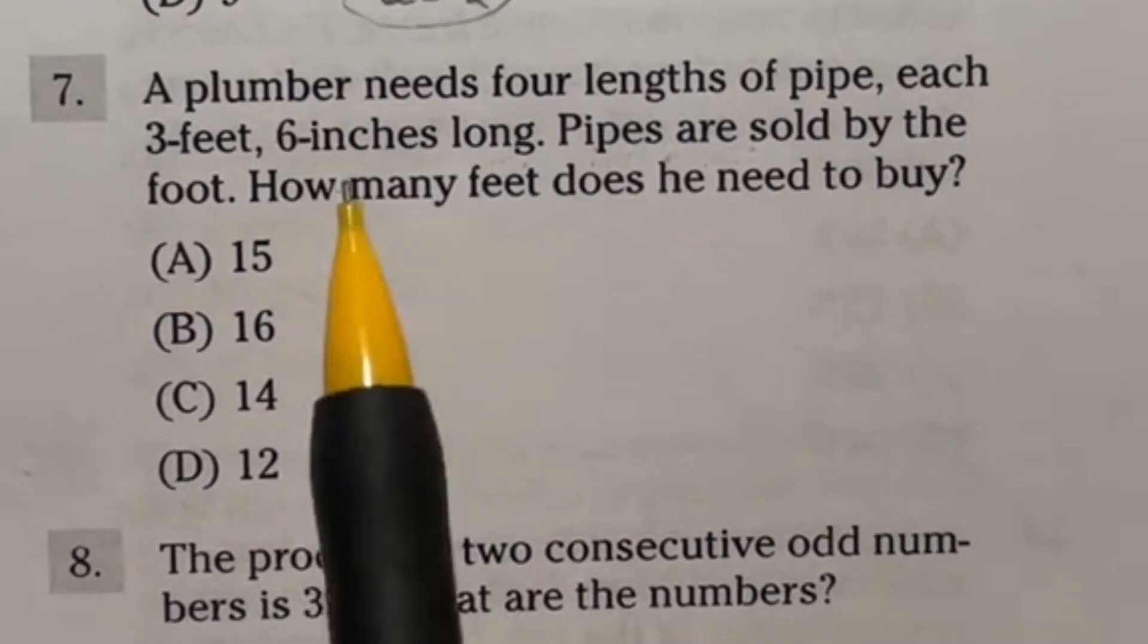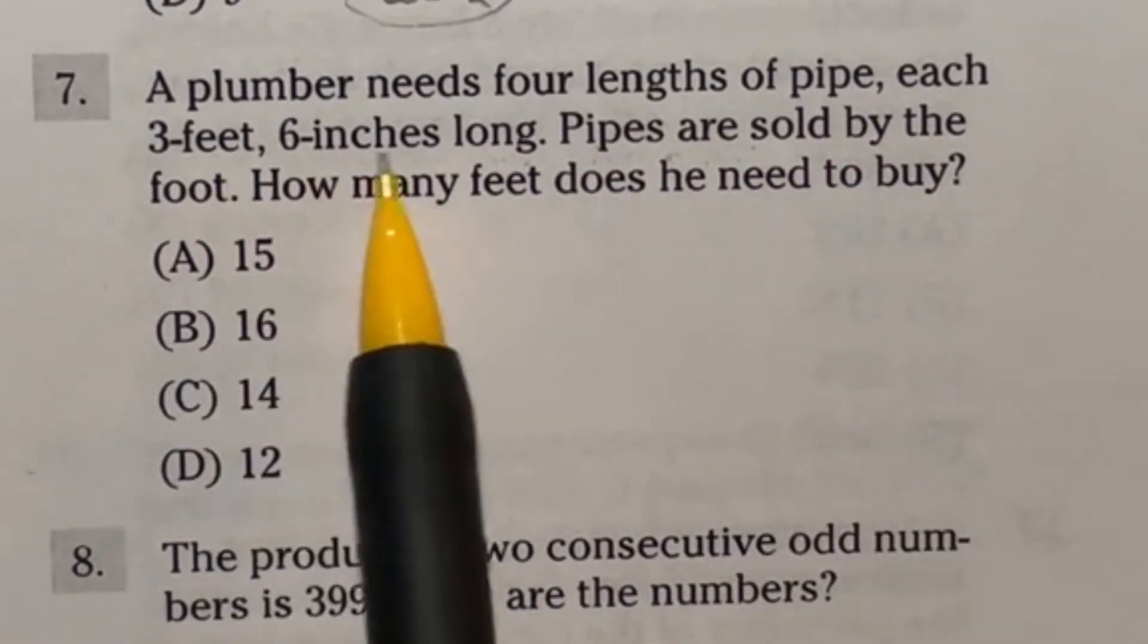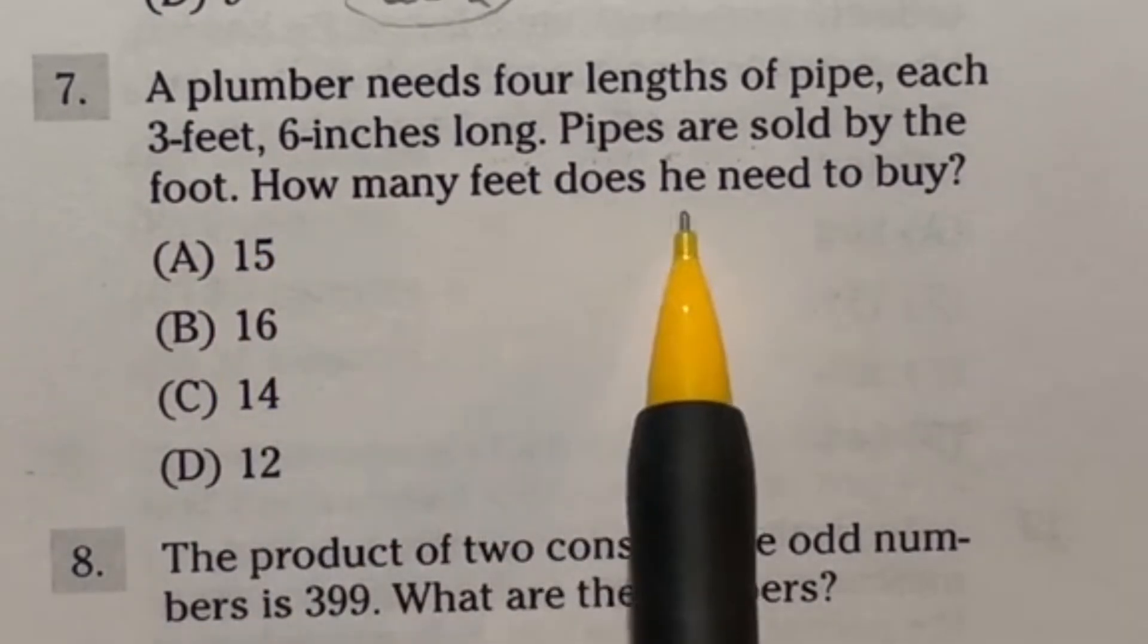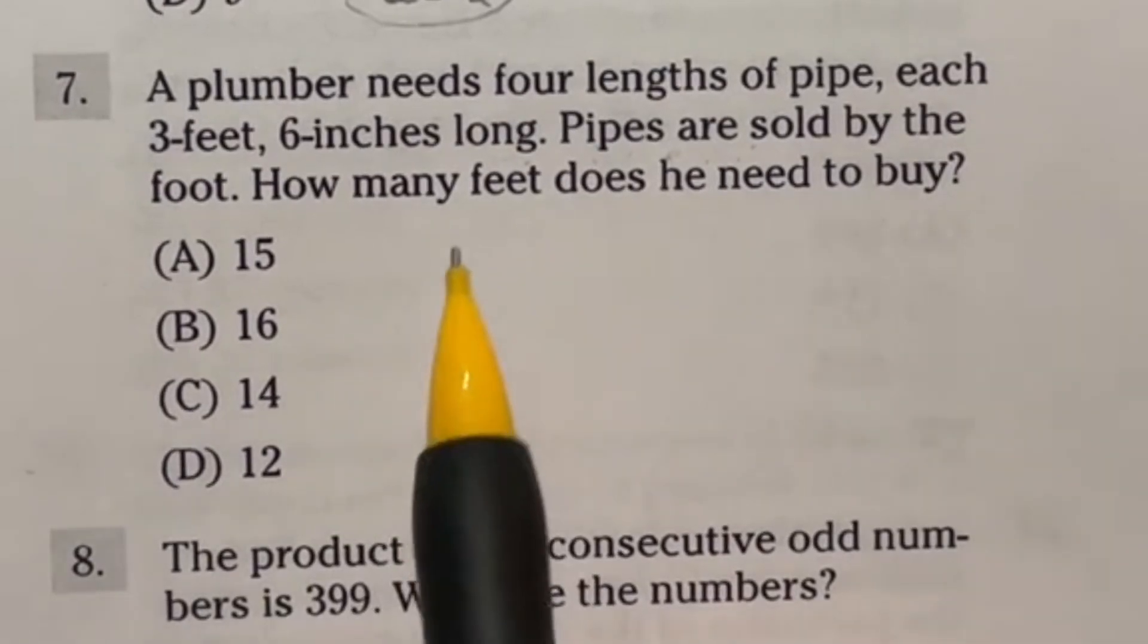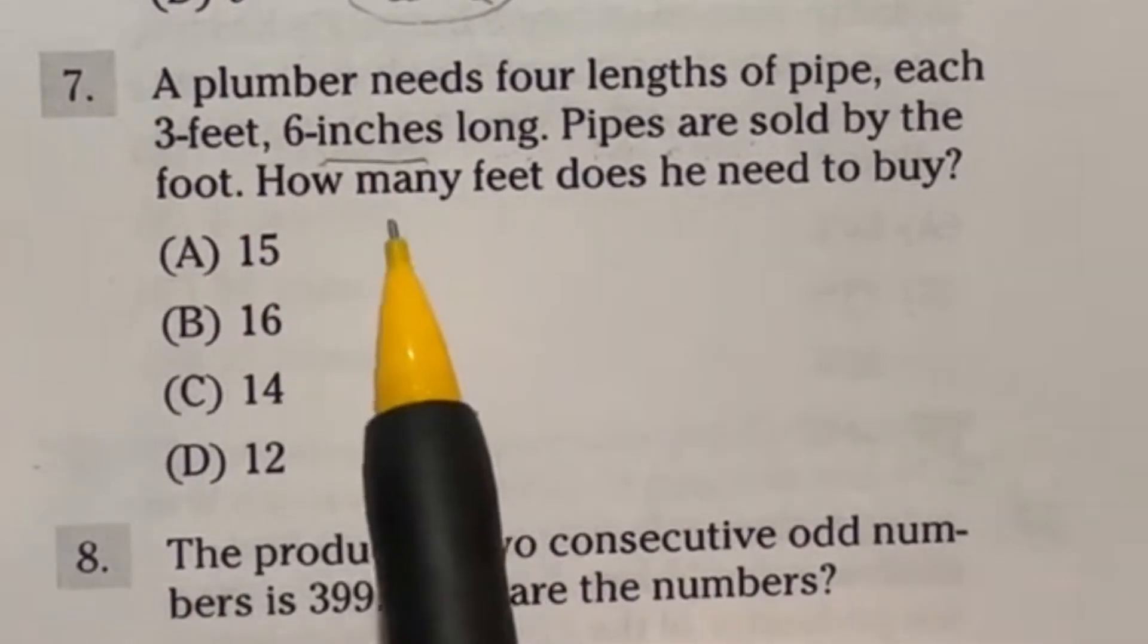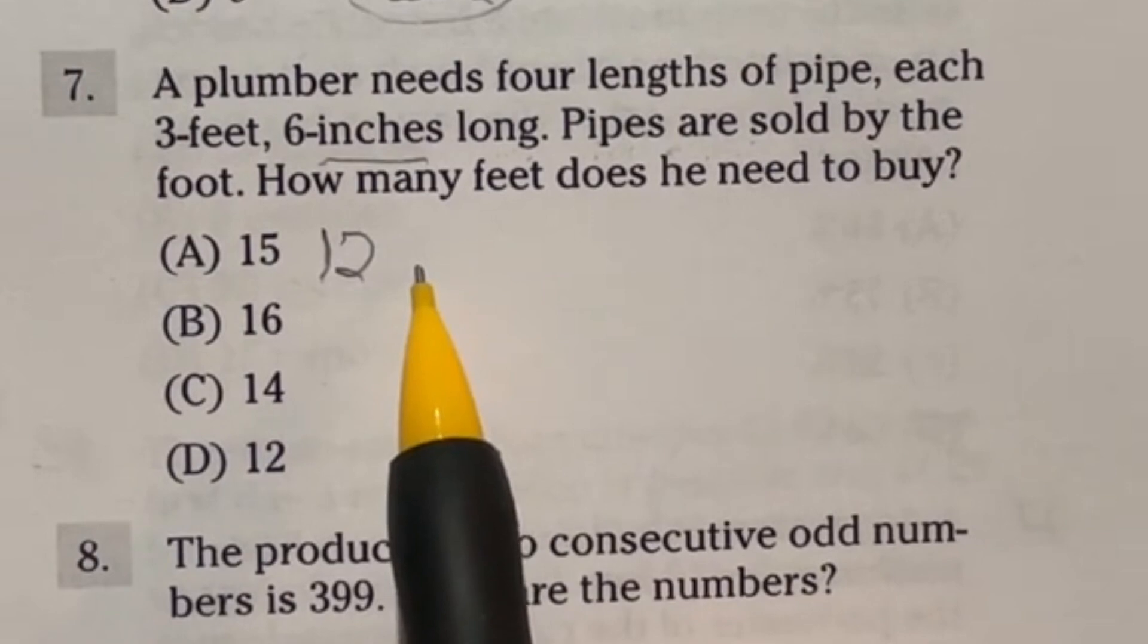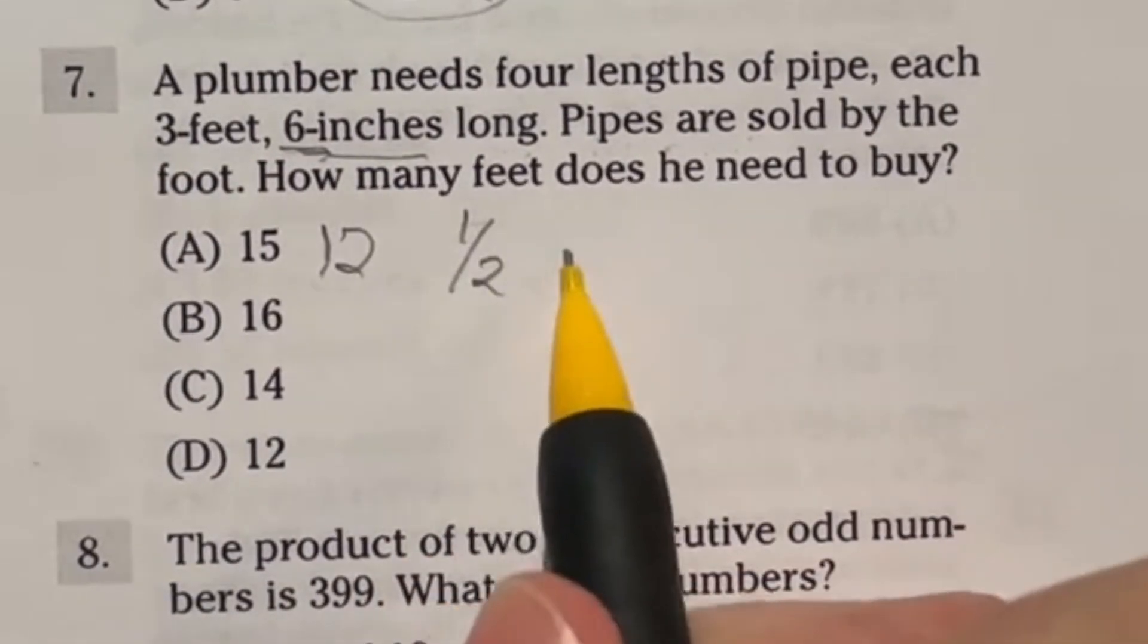Number seven says a plumber needs four lengths of pipe, each three feet, six inches long. Pipes are sold by the foot. How many feet does he need to buy? First, you are cooked with this question if you don't know how many inches are in a foot. There are 12 inches per foot.